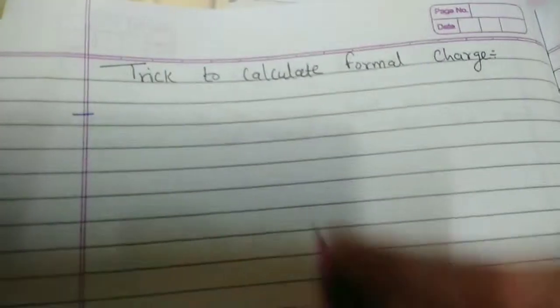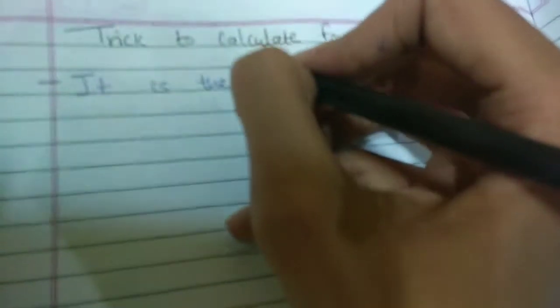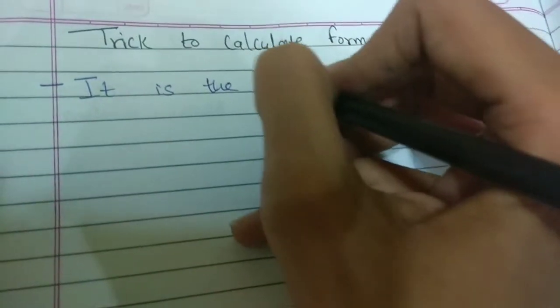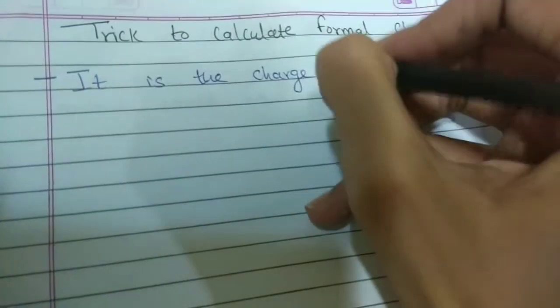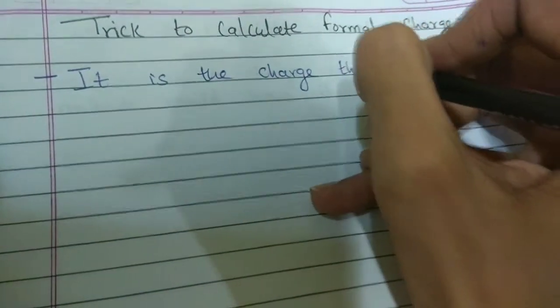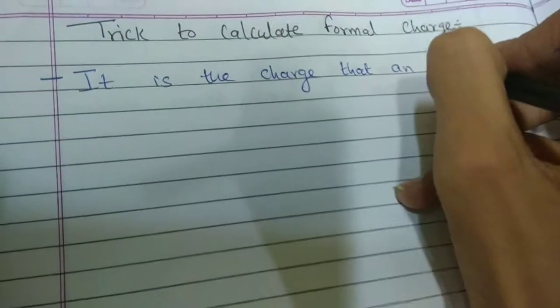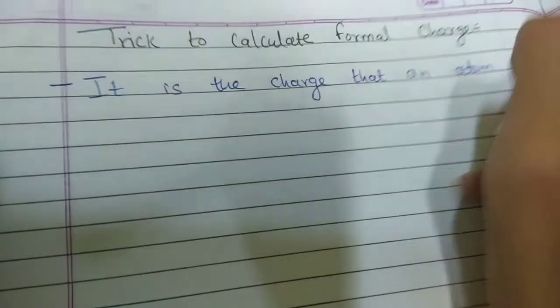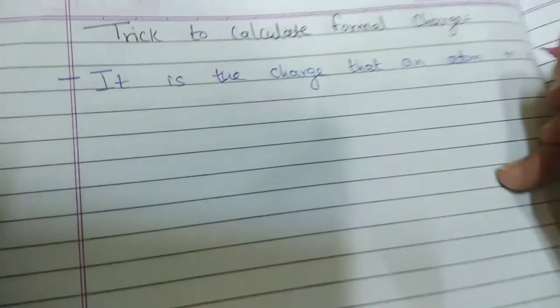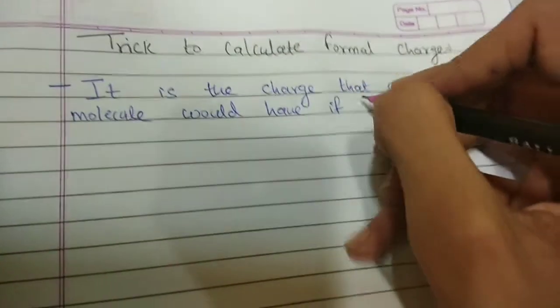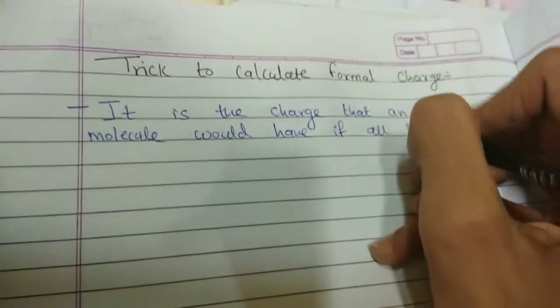So, before actually doing the trick, first let us know what is formal charge and then I will reveal the trick in the later half of the video. So, let us first start with the definition. Now, it is the charge that an atom in a molecule would have if all the atoms had the same electronegativity.